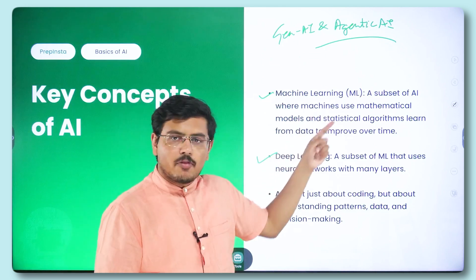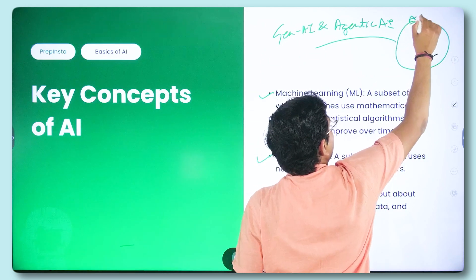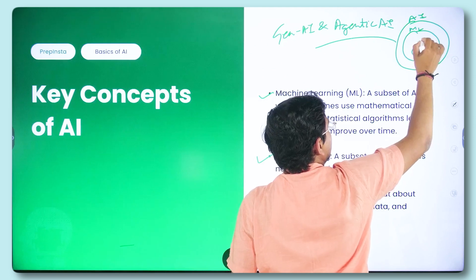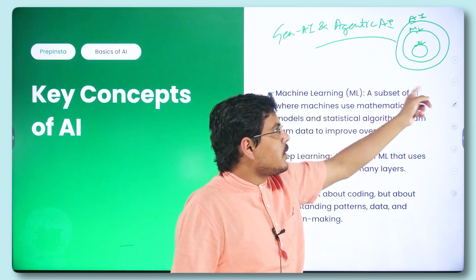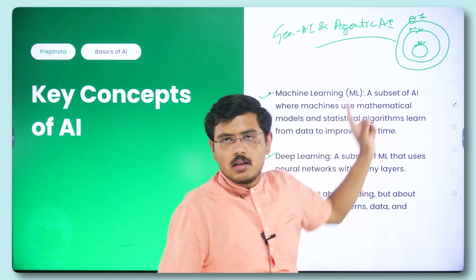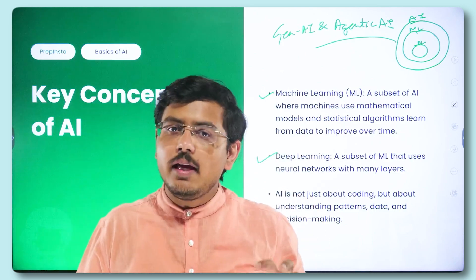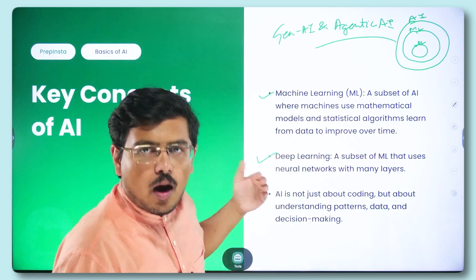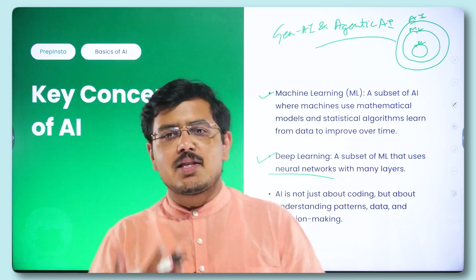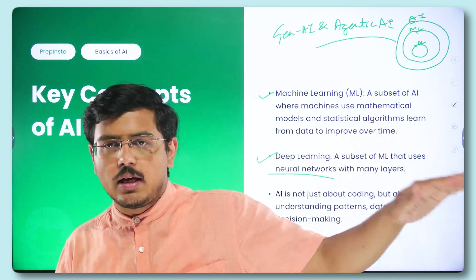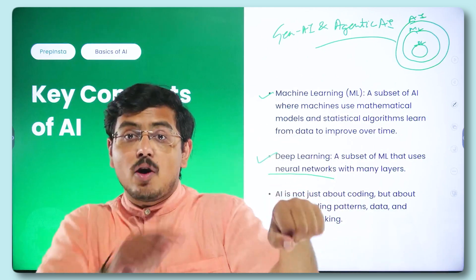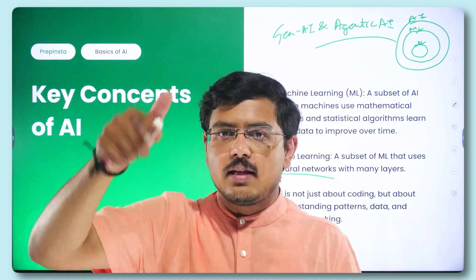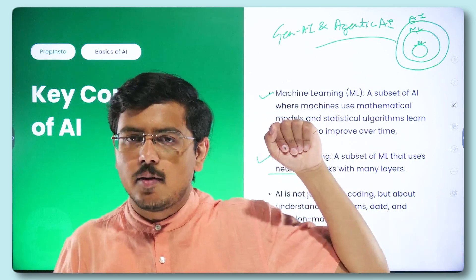Deep learning is a subset of ML. Think of it as concentric circles: AI is the biggest circle, ML is the middle circle, and DL is the innermost circle. In deep learning, you mimic the human process of learning using artificial neural networks with many layers — just as humans have neural networks. For example, when you touch a hot pan, your neuron detects heat, sends a signal to the brain, and the brain signals you to remove your hand immediately. Deep learning works similarly.